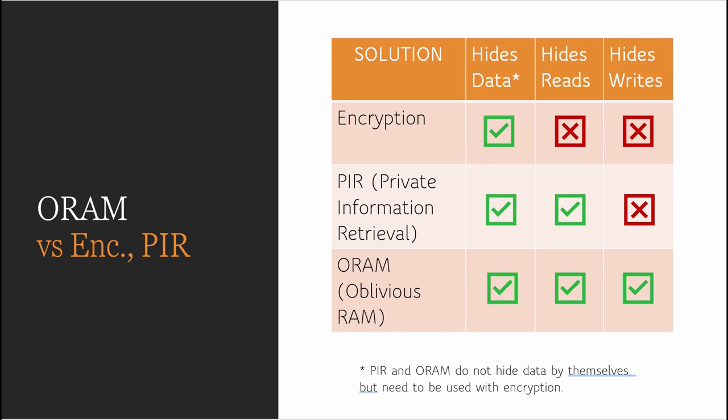There are a few cryptographic primitives that Alice could use to protect her data. The most basic is to encrypt the data. This will hide the content from the service provider, but it will not hide Alice's access pattern — her reads and her writes. She can instead use a primitive called private information retrieval, which is a protocol that allows her to read information from the database without the service provider learning what information she accessed. If she wants to protect both her reads and her writes, she can use a primitive called Oblivious RAM or ORAM.